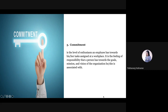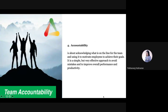Next, commitment. Commitment is the level of enthusiasm employees have towards their tasks at work. It is a feeling of responsibility that people have towards the goals, mission, and vision of the organization. Next, accountability. Accountability is about acknowledging what is on the line for the team and using it to motivate employees to achieve their goals. It is a simple but very effective approach to avoid mistakes and to improve overall performance and productivity.